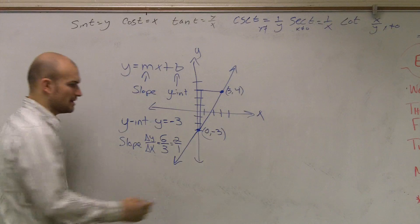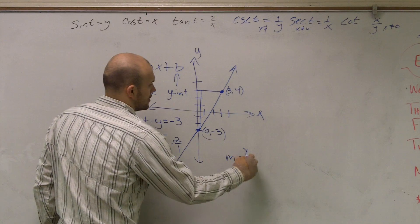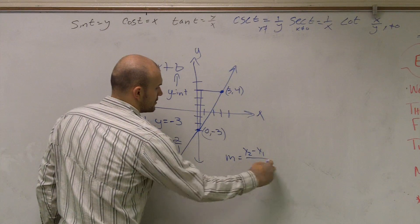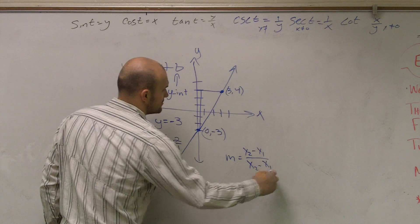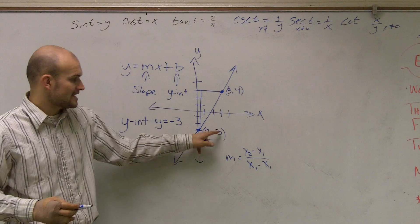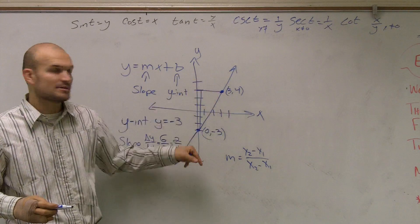The other way you could do it, remember, was the slope formula was y2 minus y1 all over x2 minus x1. You guys remember that formula where you take your y values and you subtract them from each other?